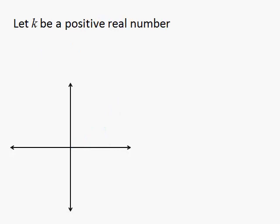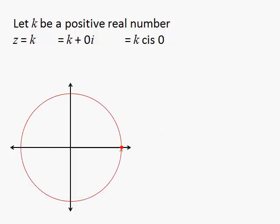If k is a positive real number, then it has no imaginary part, and it will lie on the horizontal axis to the right of the origin. That's k distance from the origin, and no angle from that axis. Or, if we go all the way around, we could also write it as k distance and one complete loop of 2π.